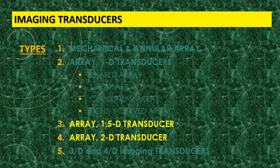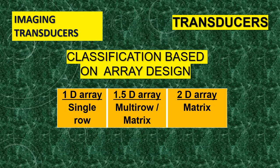In this lecture, we'll discuss the 1.5D and 2D transducers. To understand the difference between 1D, 1.5D, and 2D transducers, these numbers — 1, 1.5, or 2 — are talking about the arrangement of the active elements. It's not talking about the image. In imaging, we have 2D imaging and 3D imaging, but when you talk about the transducer design, that is a different matter.